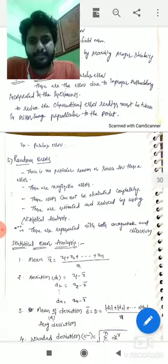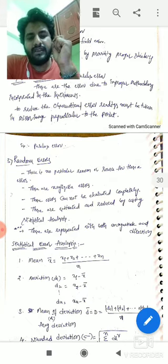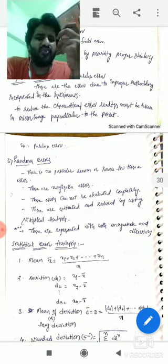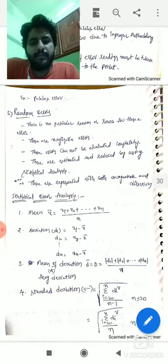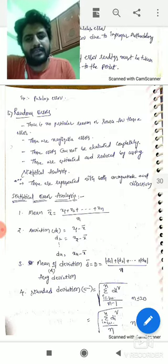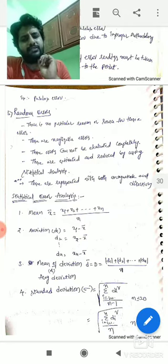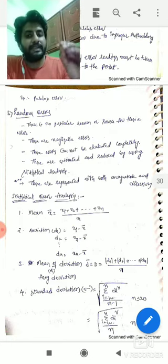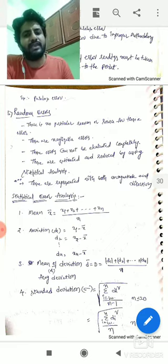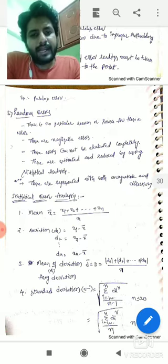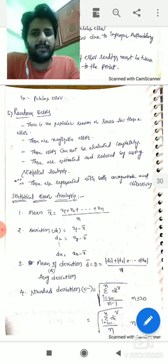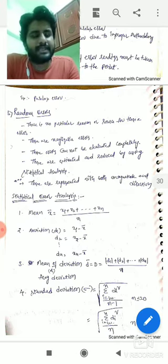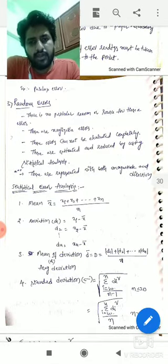After that, random errors — there is no particular reason for these errors; each and every instrument has them. These are negligible errors. We don't have proper methods to completely eliminate them; we can only reduce them. So you need some analysis to reduce these errors in order to get accurate results, and that analysis is called statistical analysis.